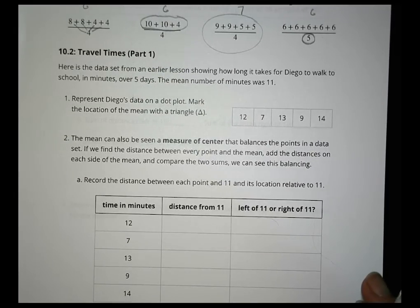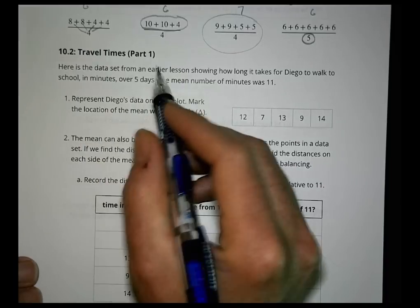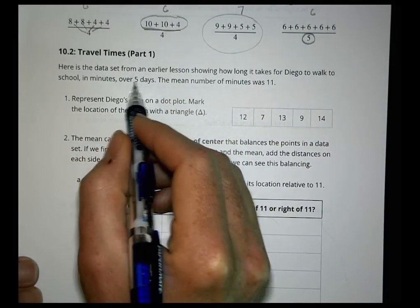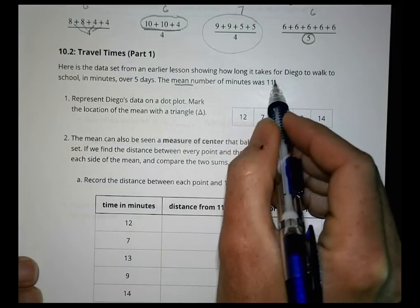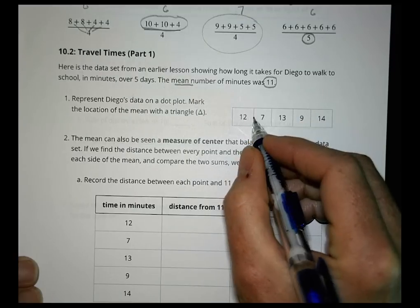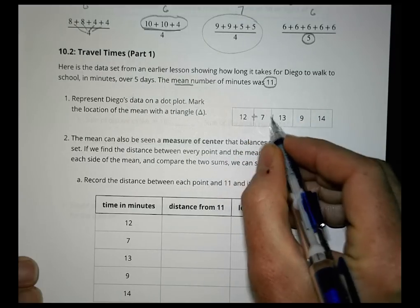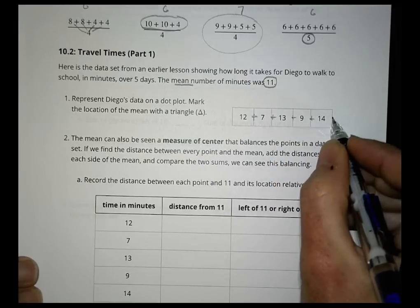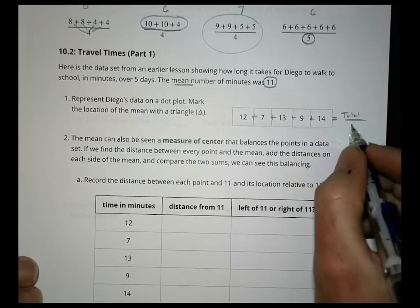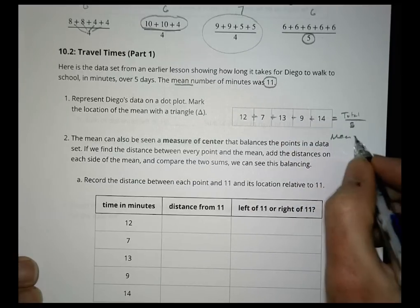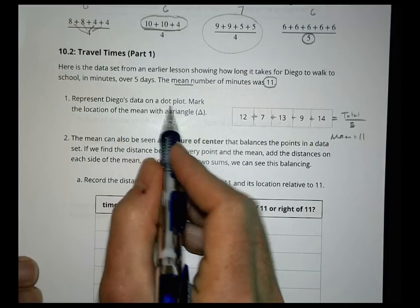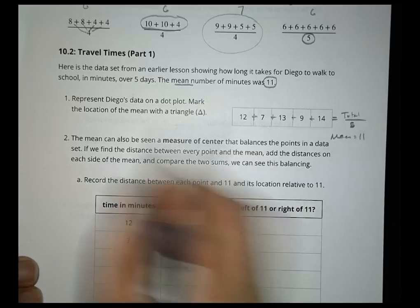Activity 10.2, travel times part one. Here's a data set from earlier lessons showing how long it takes Diego to walk to school in minutes over five days. The mean number of minutes was 11. If we add all the values up and divide by five, the mean is 11. Represent Diego's data on a dot plot and mark the location of the mean with a triangle.